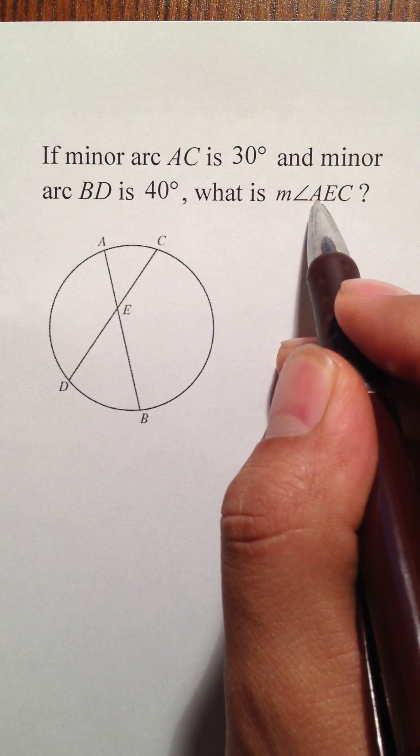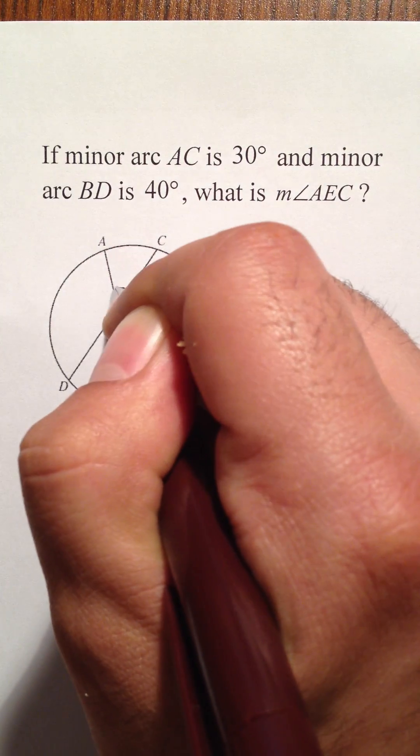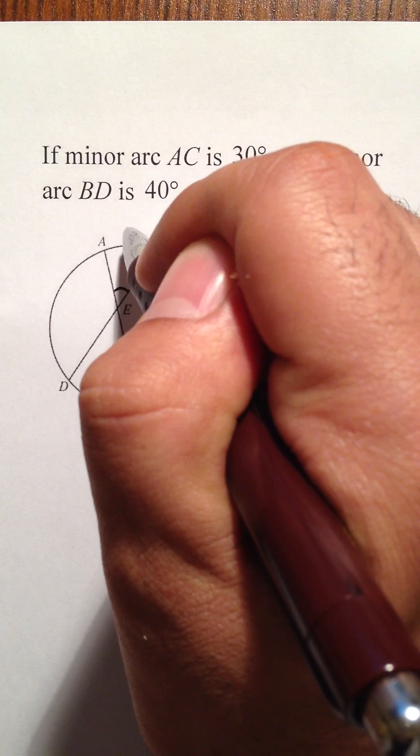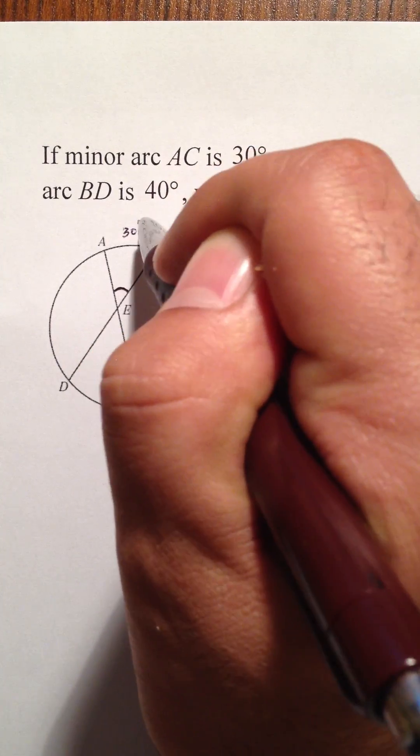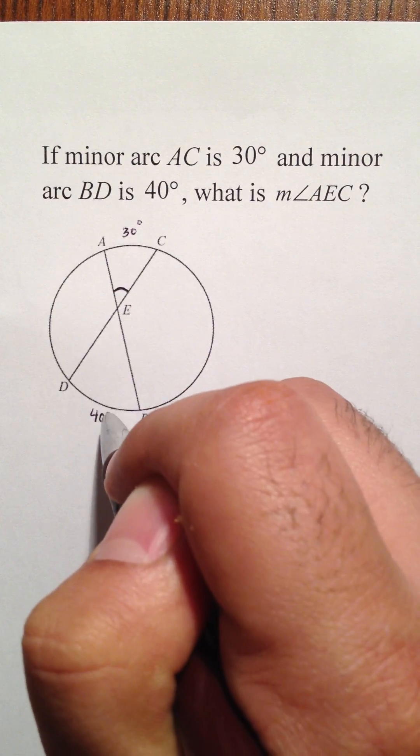They want to know what degrees that is. They have given you the degrees of arc AC which is 30 degrees up here. They've also given you the degrees of the arc BD down here which is 40 degrees.